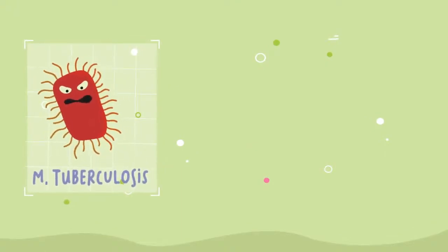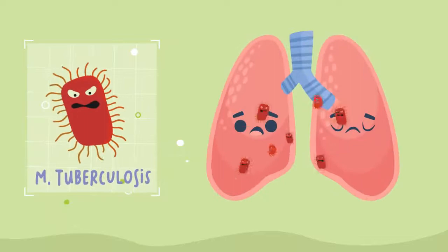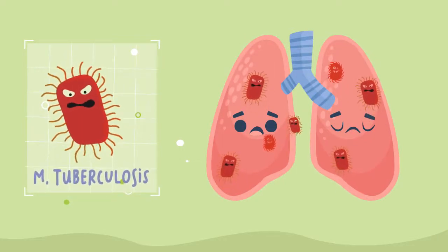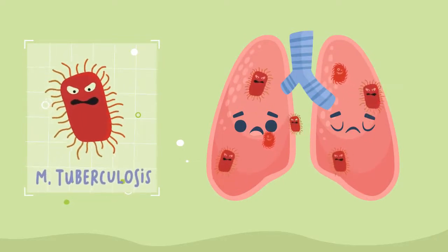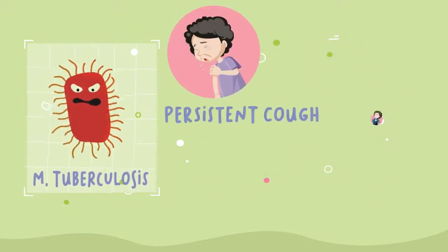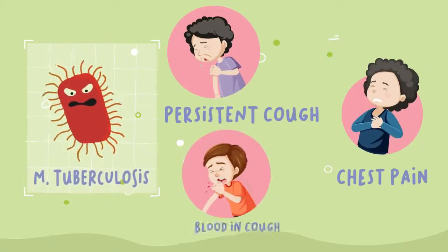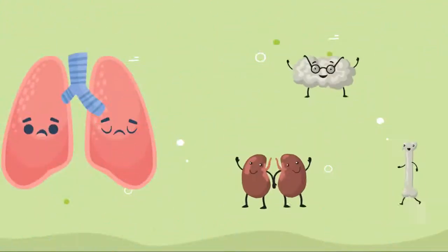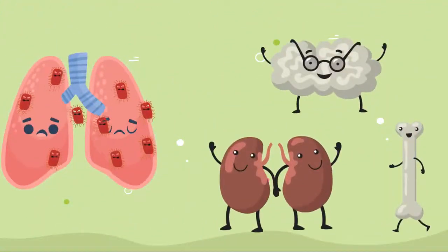When these little guys infect people's lungs, they can cause respiratory problems such as coughing, chest pain, and even coughing up blood. However, the story doesn't end there. When the TB bacteria spread from the lung to other organs, things could get really messy.